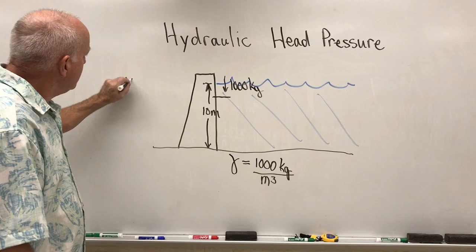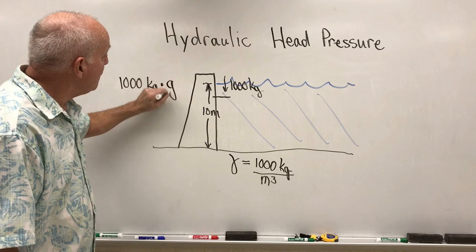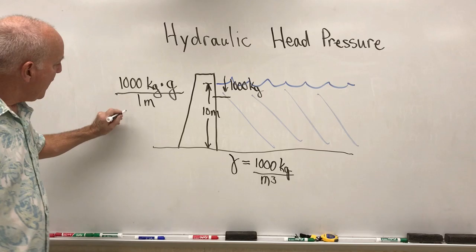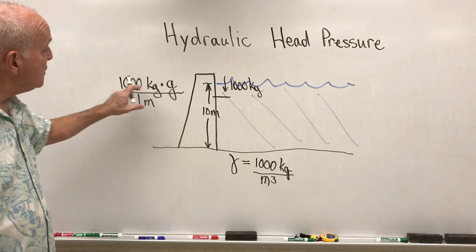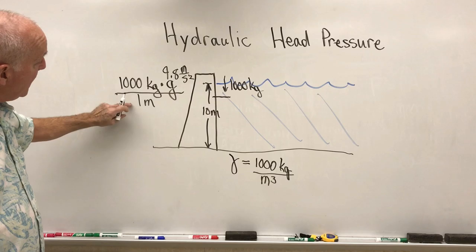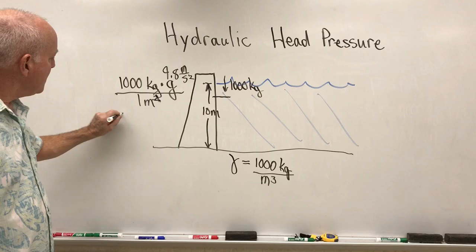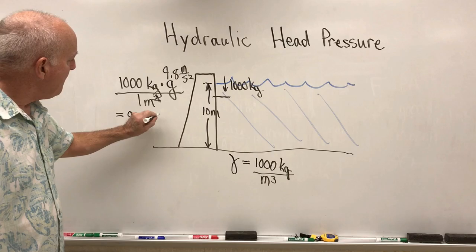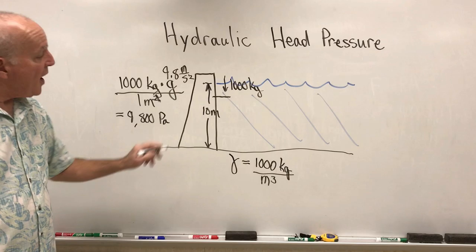Now that's 1,000 kilograms times the acceleration of gravity, which gives me the force divided by a meter. So if I'm looking at this and wanting to understand what the pressure is, I need to do this calculation. So I've got 1,000 times 9.8 meters per second squared. That means that's 9,800 Newtons divided by 1 meter squared, which is equal to 9,800 Pascal per meter of depth.